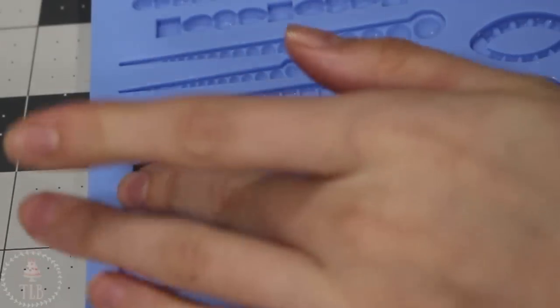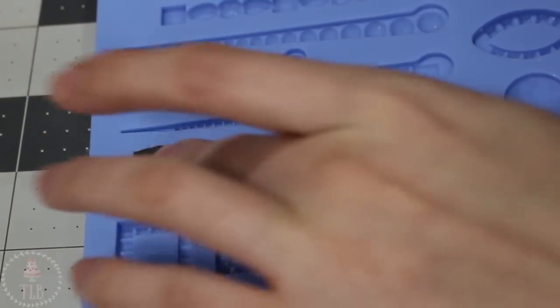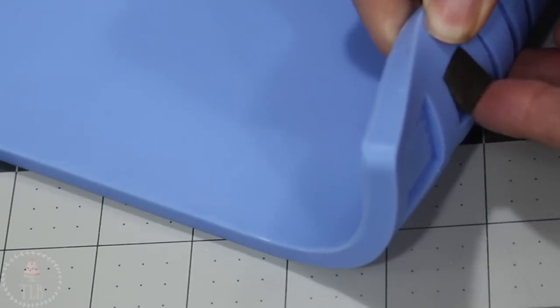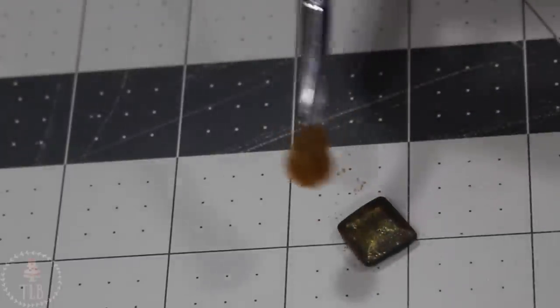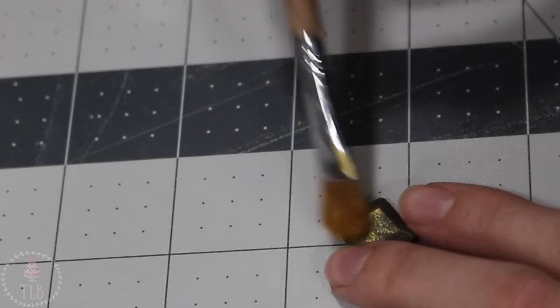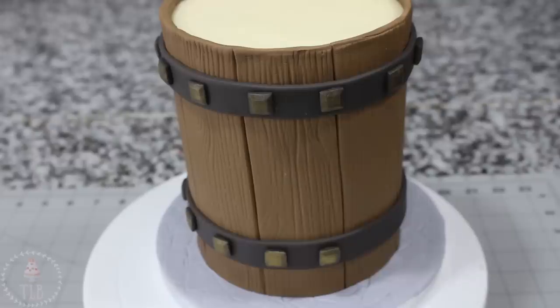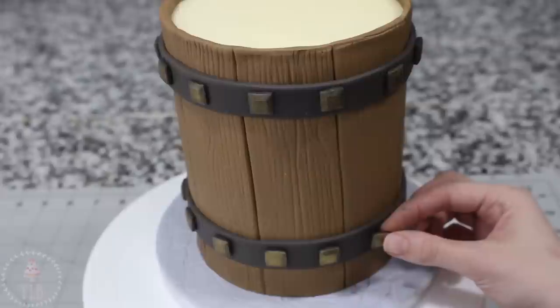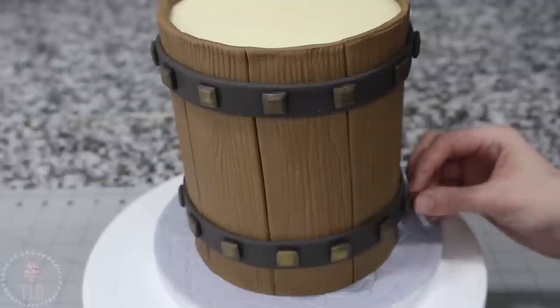I have this jewel gum paste mold and I'm just using the same color I used for those bands going around the mug and I'm just making a bunch of these little square gem shapes. Once they've dried I'm brushing them very lightly with a little bit of gold luster dust. I don't want them to be solid gold, I want them to look more like a dirty gold. I rubbed the back of each one with a little bit of shortening and I'm going to place those down along those darker bands, just spacing them out as evenly as I can.